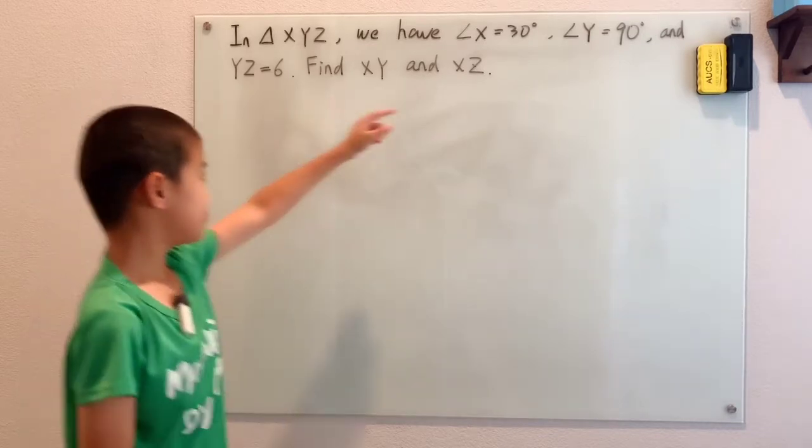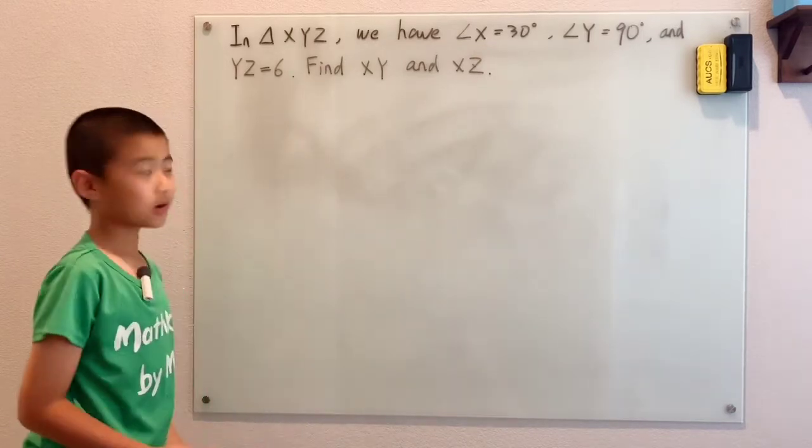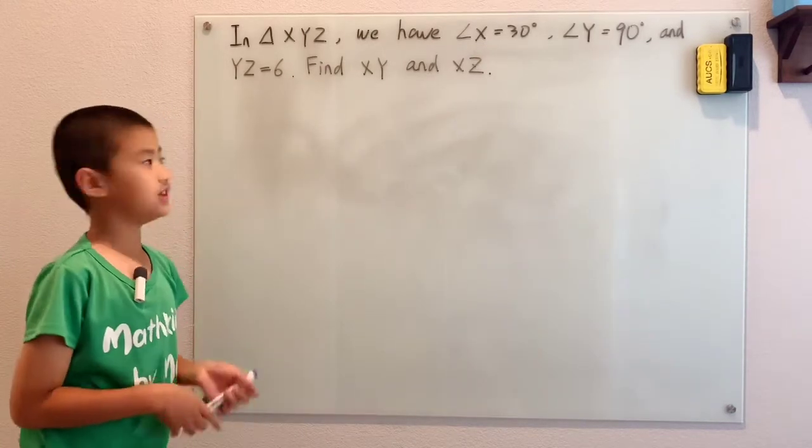Now for this problem, we have Y equals 90 degrees and X equals 30 degrees. Both of those are angles on a triangle, so this is a 30-60-90 triangle.